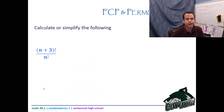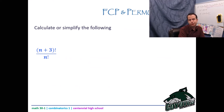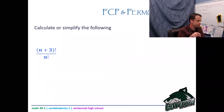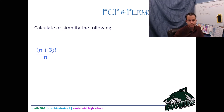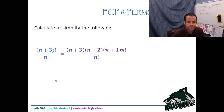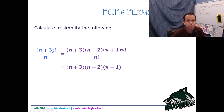Try this one: (n+3)!/n!. The bigger term is n+3, so expand it down until you hit n. What comes before n+3? It's n+2, then n+1, then n. So (n+3)! = (n+3)×(n+2)×(n+1)×n!. The n! factors divide each other out, leaving (n+3)×(n+2)×(n+1).